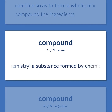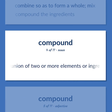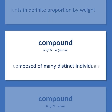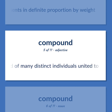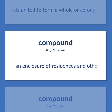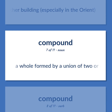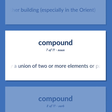Compound (chemistry): A substance formed by chemical union of two or more elements or ingredients in definite proportion by weight. Composed of many distinct individuals united to form a whole or colony. An enclosure of residences and other buildings, especially in the Orient. A whole formed by a union of two or more elements or parts.